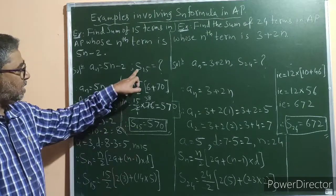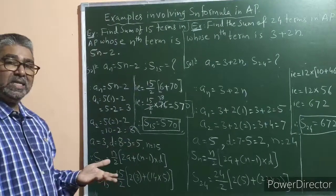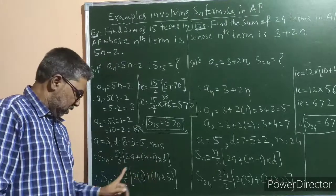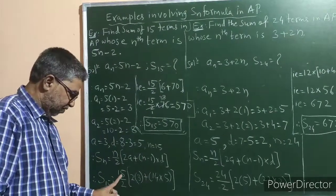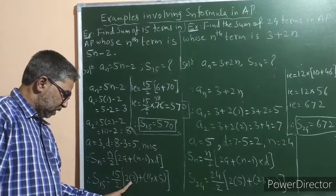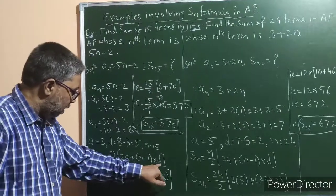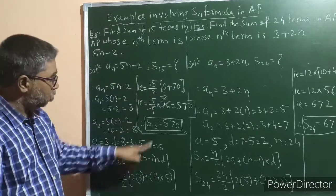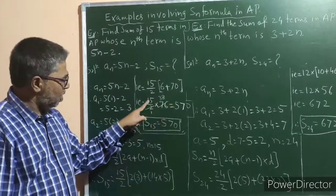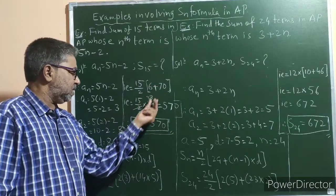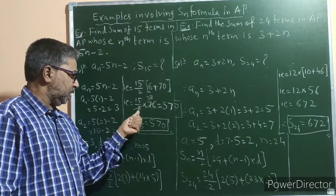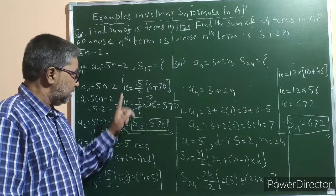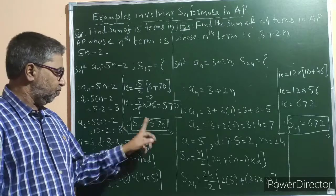With n = 15, apply the Sn formula: Sn = n/2 × (2a + (n−1)d). Therefore S15 = 15/2 × (2×3 + (15−1)×5) = 15/2 × (6 + 14×5) = 15/2 × (6 + 70) = 15/2 × 76. Dividing 76 by 2 gives 38, and 15 × 38 = 570. So the sum of the first 15 terms is 570.